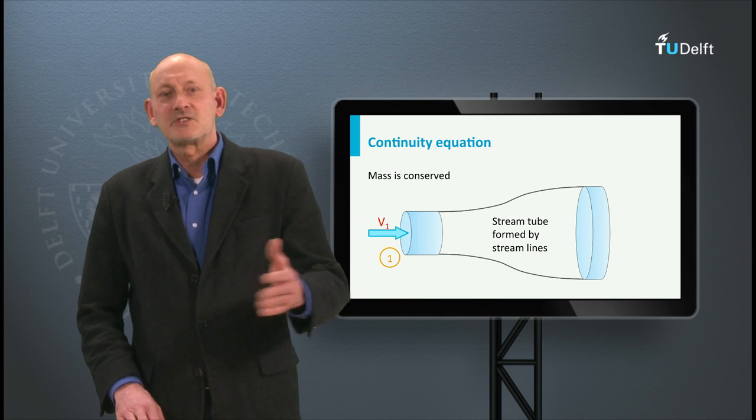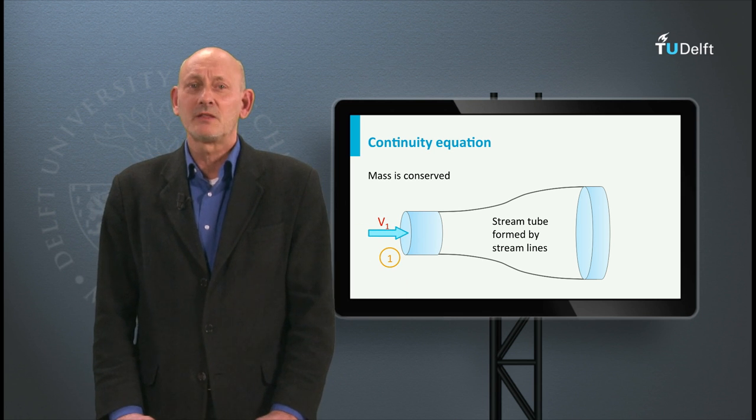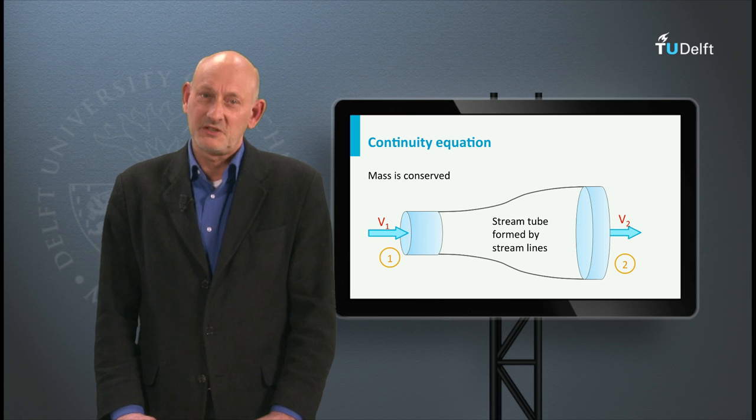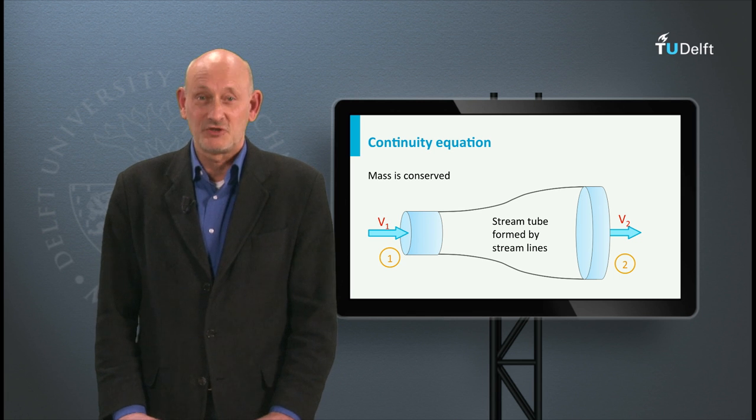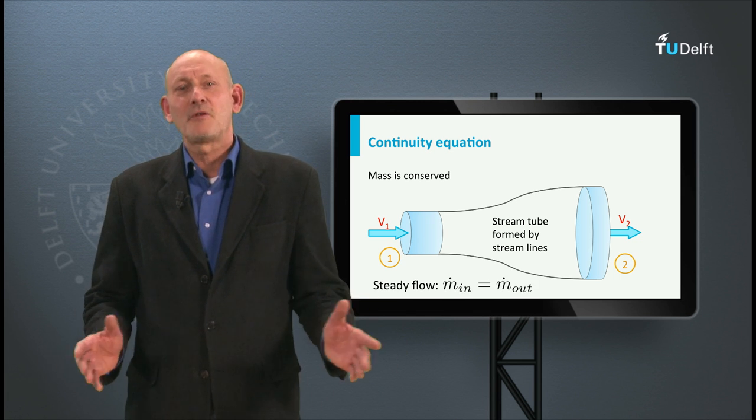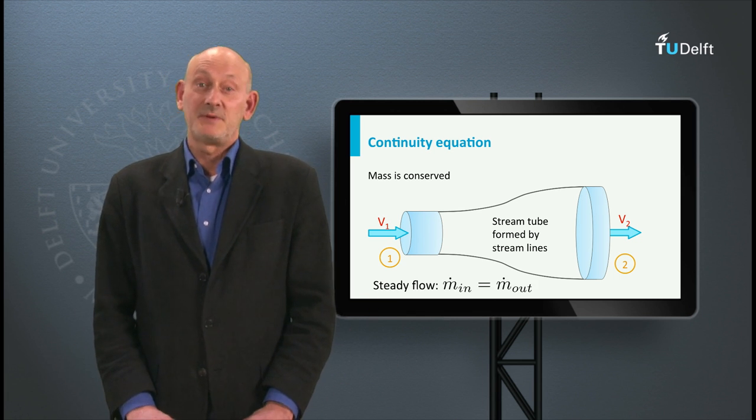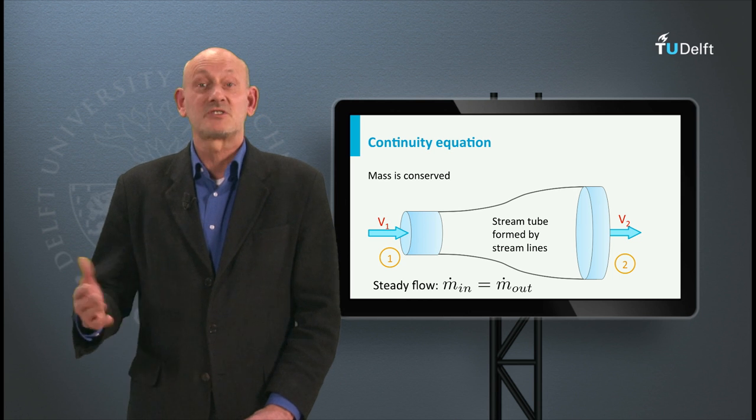The flow comes in at station 1 with velocity V1 and comes out at station 2 with velocity V2. The areas are respectively A1 and A2. For steady flow the mass per second at entry must be the same as the mass per second coming out at station 2.